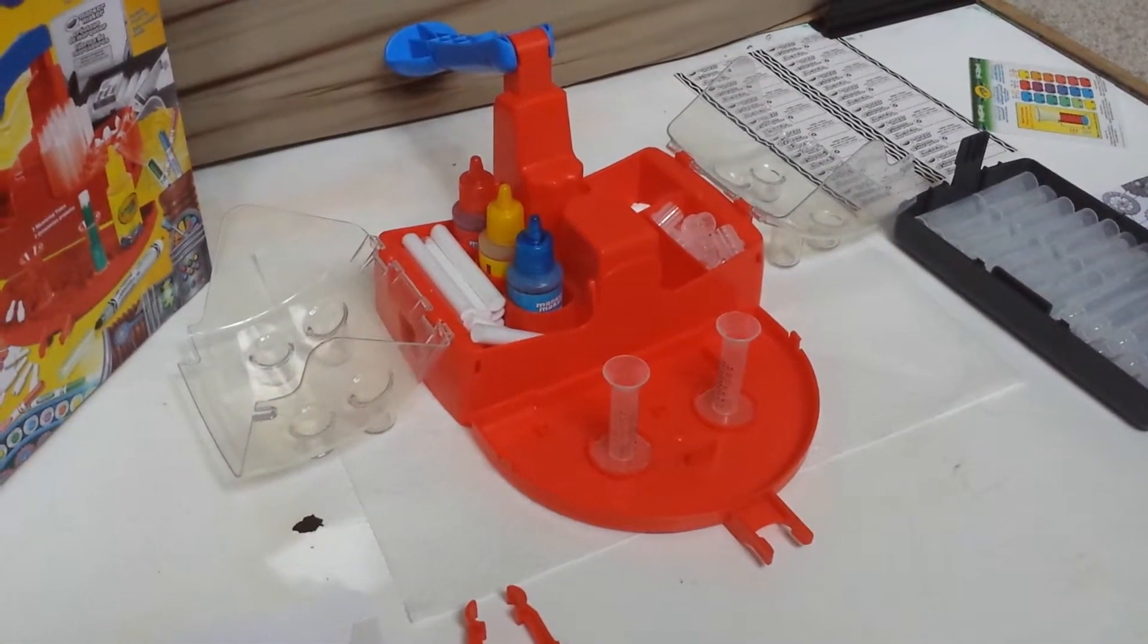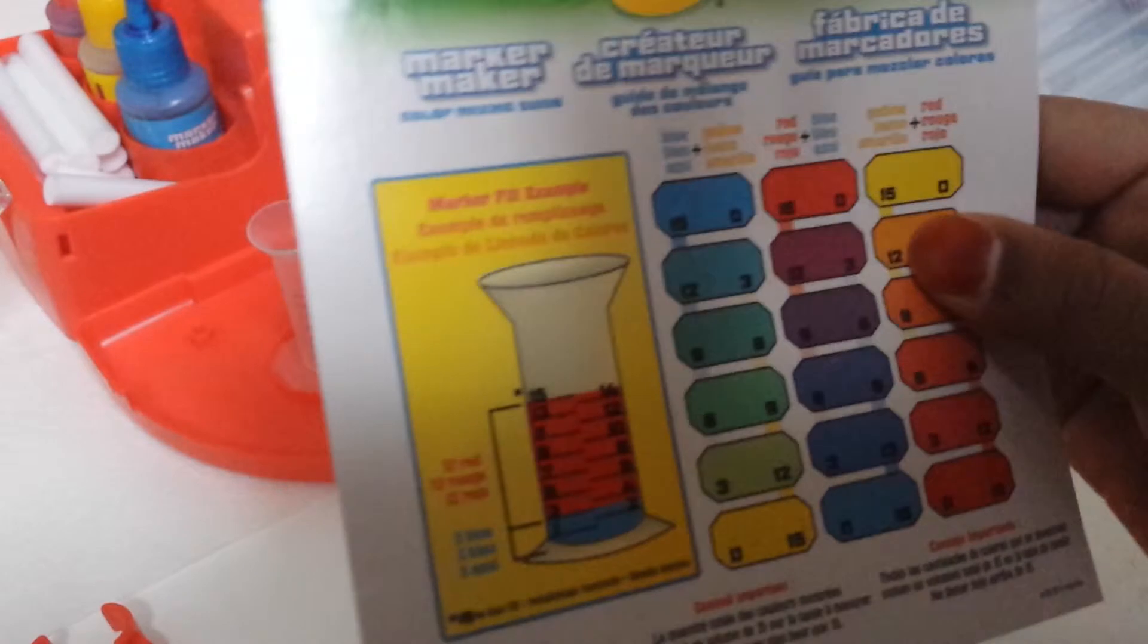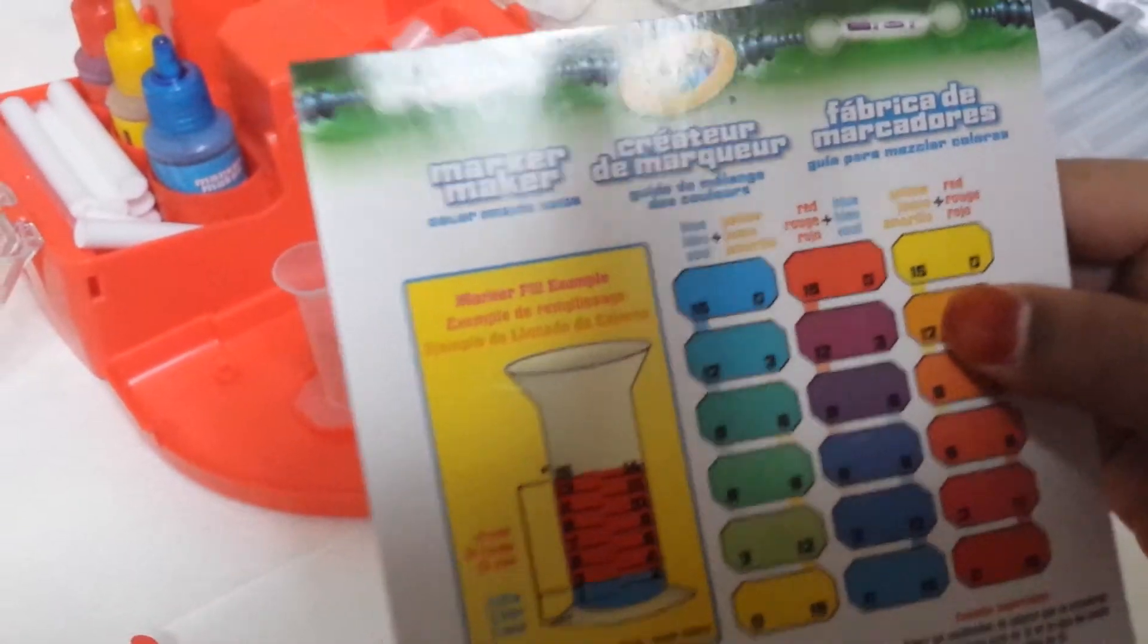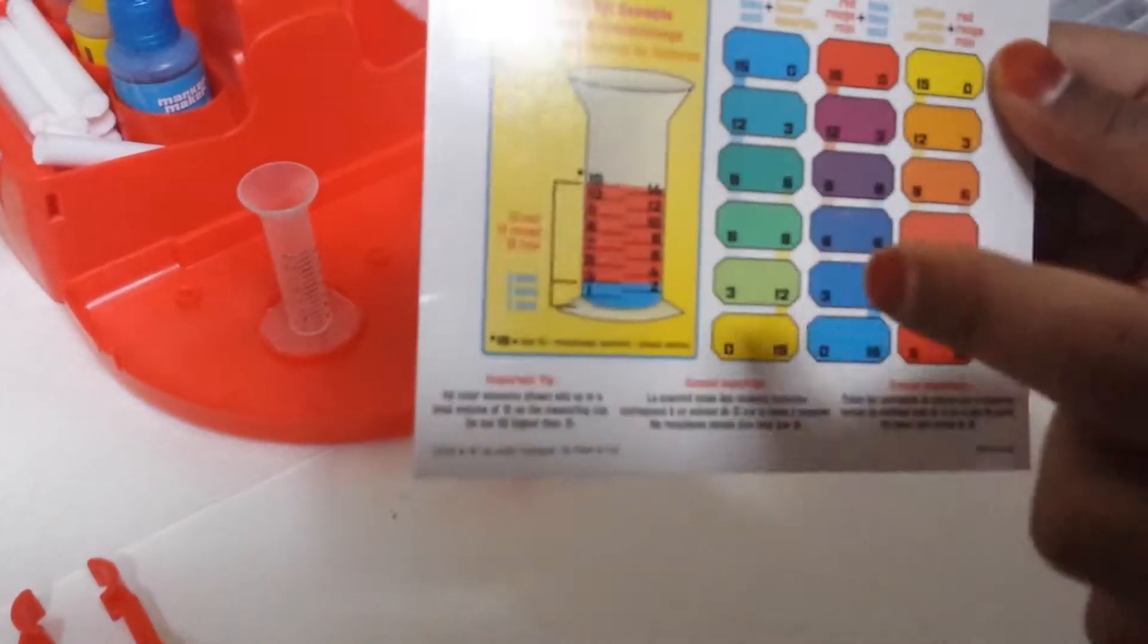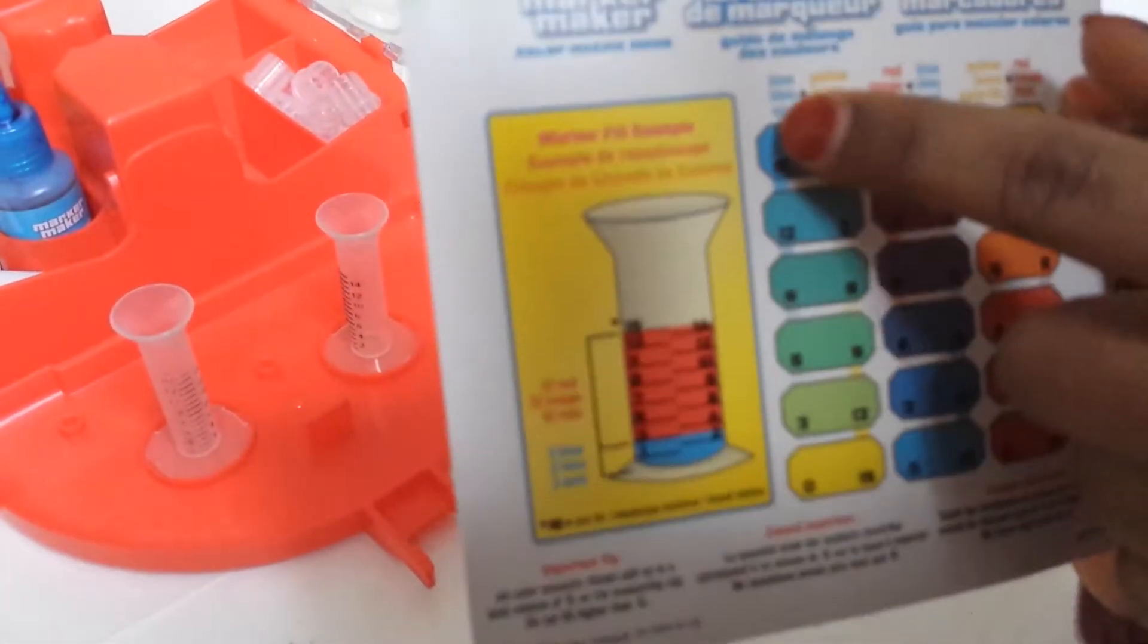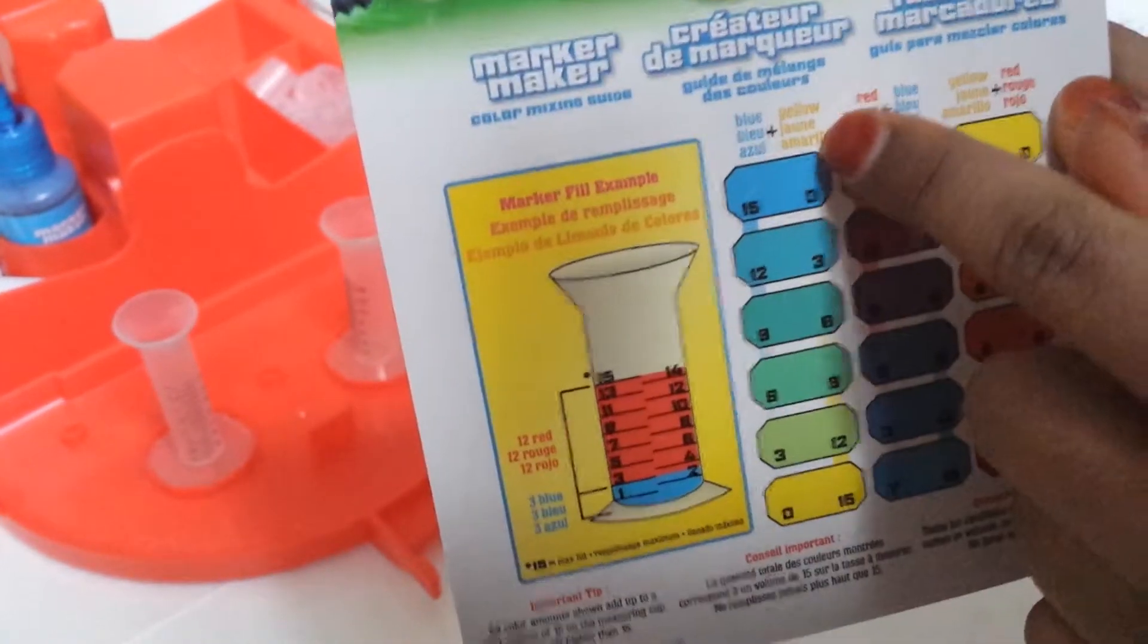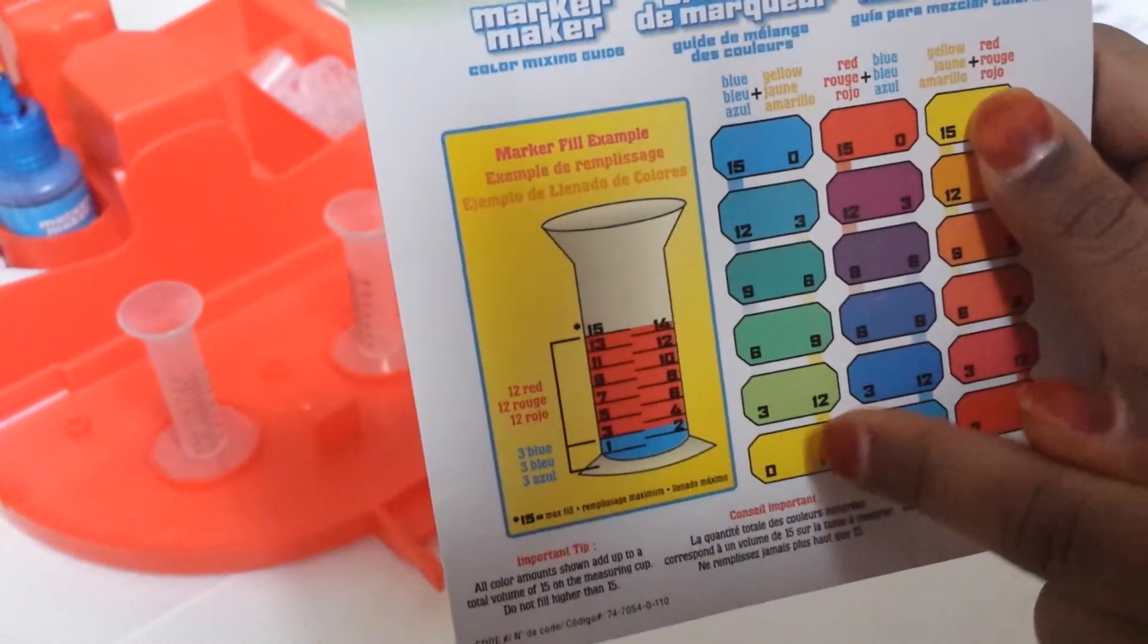Let's start by seeing the card, the color mixing guide. I think it would be good if we made this color, light green. You'll see the blue. So we take three drops of blue and twelve drops of yellow.